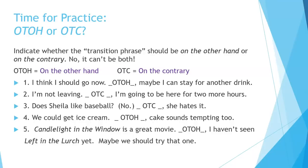Number one: 'I think I should go now. On the other hand, maybe I can stay for another drink.' Two: 'I'm not leaving. On the contrary, I'm going to be here for another two hours.' Three: 'Does Sheila like baseball?' 'No — on the contrary, she hates it.' Four: 'We could get ice cream. On the other hand, cake sounds tempting too.' Five: 'Candlelight in the Window is a great movie. On the other hand, I haven't seen Left in the Lurch yet — maybe we should try that one.'